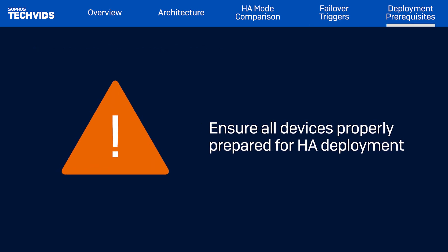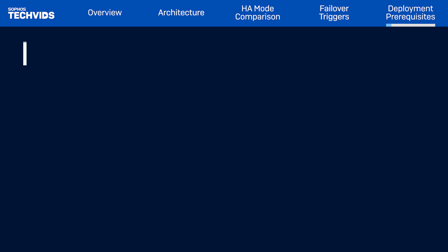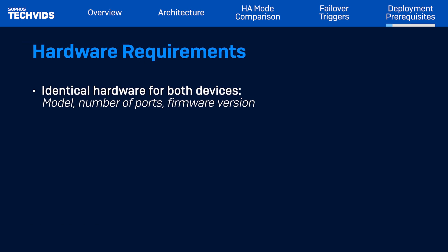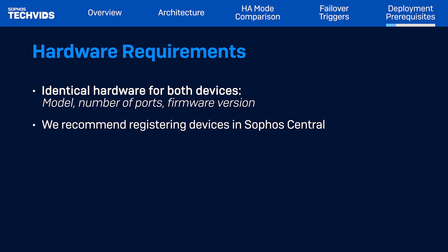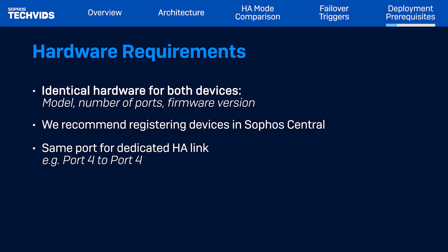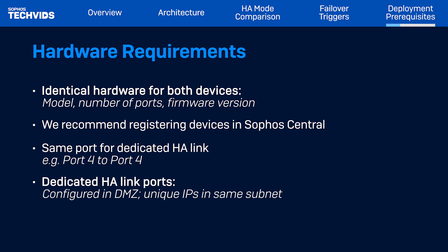When planning your HA deployment, first ensure that the firewall environment is prepared with the necessary prerequisites — refer to the linked documentation for a comprehensive list. The most common errors network administrators make when configuring HA include: ensure you're using identical hardware for both devices — the same model, the same number of ports, and identical firmware versions. We recommend you register both nodes in Sophos Central for easier management. You must also use the same port for the dedicated HA link; if the primary device uses port 4, the auxiliary must also use port 4. Additionally, the dedicated HA link ports of both nodes must be configured in the DMC zone with unique IP addresses, and these IPs must be within the same subnet.